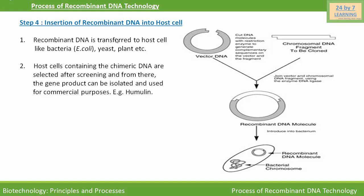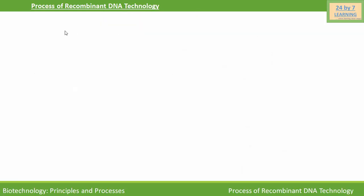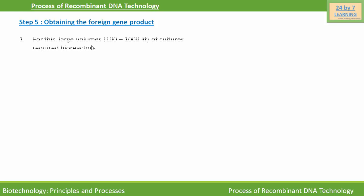Now come to the fifth step of recombinant DNA technology, that is, obtaining the foreign gene product. For this, large volumes — for example, 100 to 1000 liters of cultures — are required, for which bioreactors were developed.